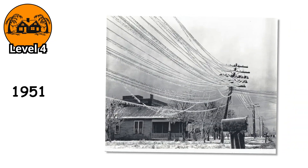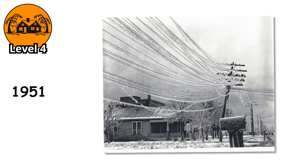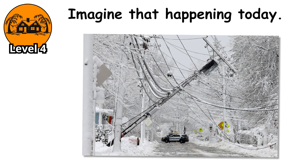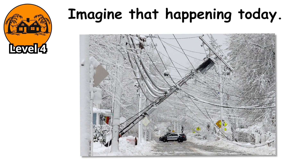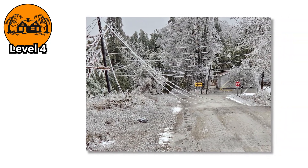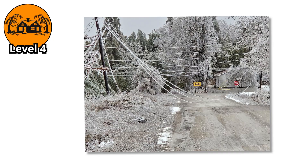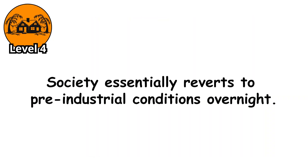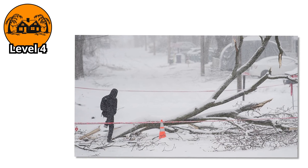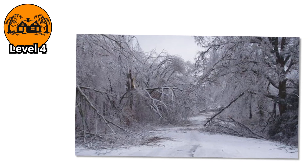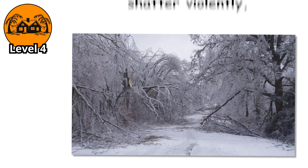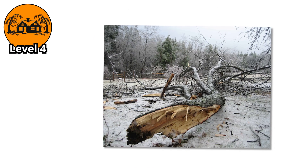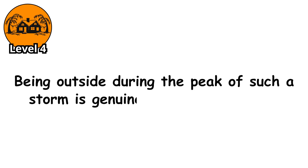But that was in 1951, when society was less dependent on electricity. Imagine that happening today. No power means no heat in winter, no refrigeration, no ability to charge phones, no internet, no way to pump gas — gas pumps need electricity. Society essentially reverts to pre-industrial conditions overnight. Trees at this accumulation level don't just break — they explode. The internal stress from ice weight becomes so extreme that trunks shatter violently, sending shrapnel-like wood fragments flying. Being outside during the peak of such a storm is genuinely life-threatening.